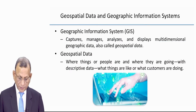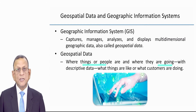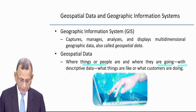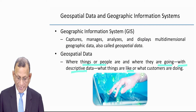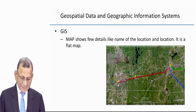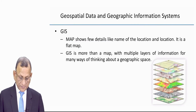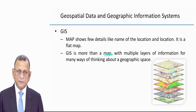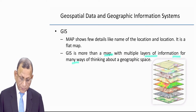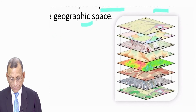Geospatial data tells us where things or people are, where they are going, what the current situation is, and what may happen — combined with descriptive data about what things are like or what customers are doing. GIS is more than a map; it provides multiple layers of information for many ways of thinking about a geographic space.